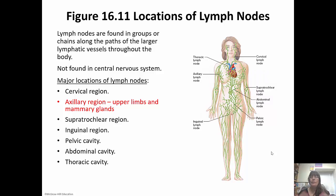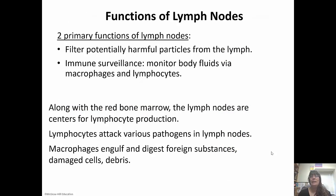Lymph nodes are found throughout the body but not in the central nervous system — in the cervical region, axillary region (which drains the upper limbs and mammary glands), pelvic, abdominal, thoracic, and other regions. The lymph nodes have two functions: they filter anything harmful in the lymph and get rid of it, and they monitor body fluids through macrophages and lymphocytes, performing immune surveillance. Along with the red bone marrow, lymph nodes are centers for lymphocyte production, and macrophages engulf and digest foreign substances, debris, and damaged cells.